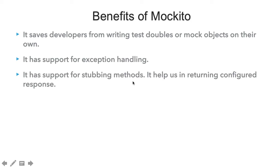Mockito also has support for stubbing methods, which means it helps us in returning configured responses. Whenever we perform unit testing on any class and that class is dependent on an external dependency — such as a database — and we call any method on the external service, Mockito helps us in creating the test double for that external dependency and provides stubbing support so we can return a configured response to use in our test and perform asserts on it.